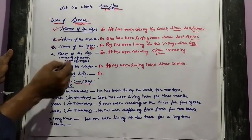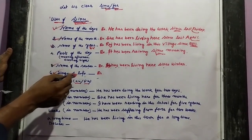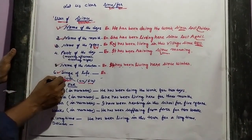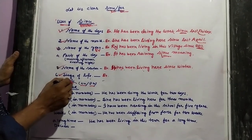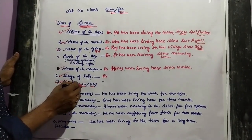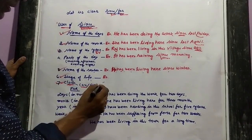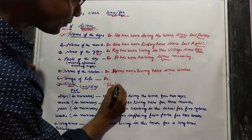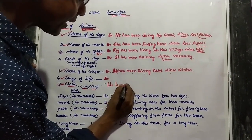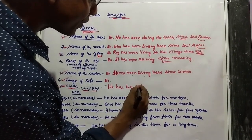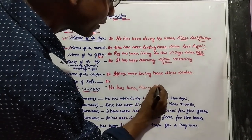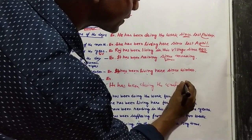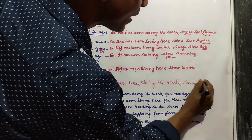We also use 'since' with clock time — that is, when a specific time like 8 o'clock or 7 o'clock is mentioned. For example: 'He has been doing the work since 5 AM.' When a clock time like AM or PM is given, use 'since'.